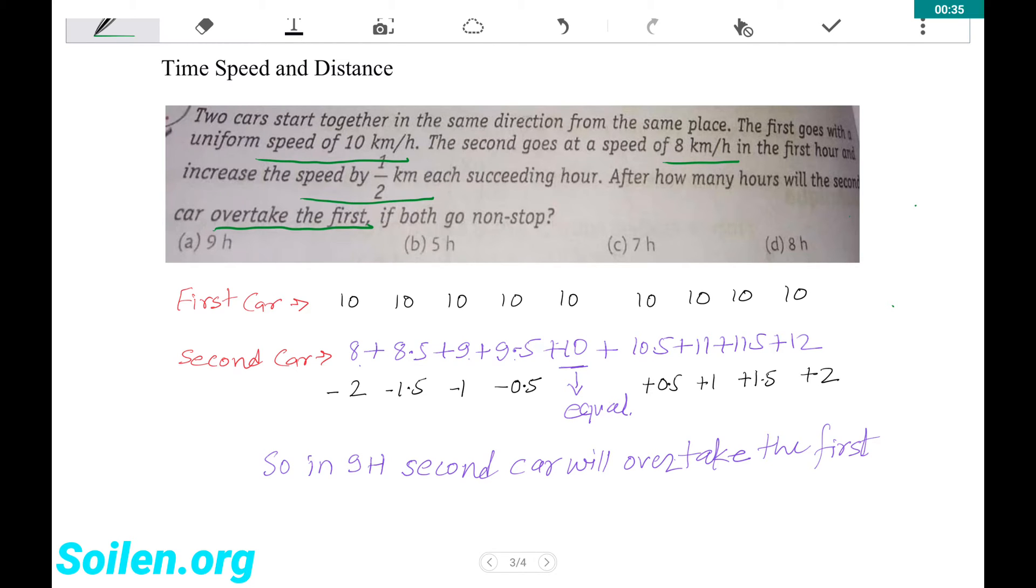Given the first car goes with a uniform speed of 10 km per hour, it means it will cover 10 km every hour.